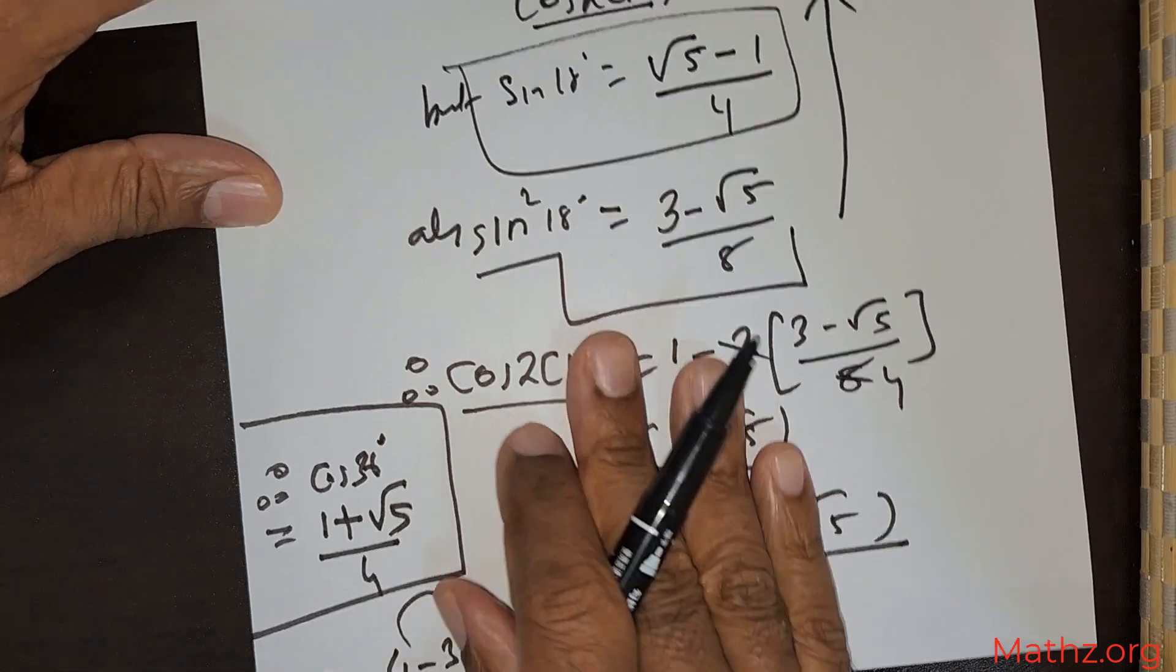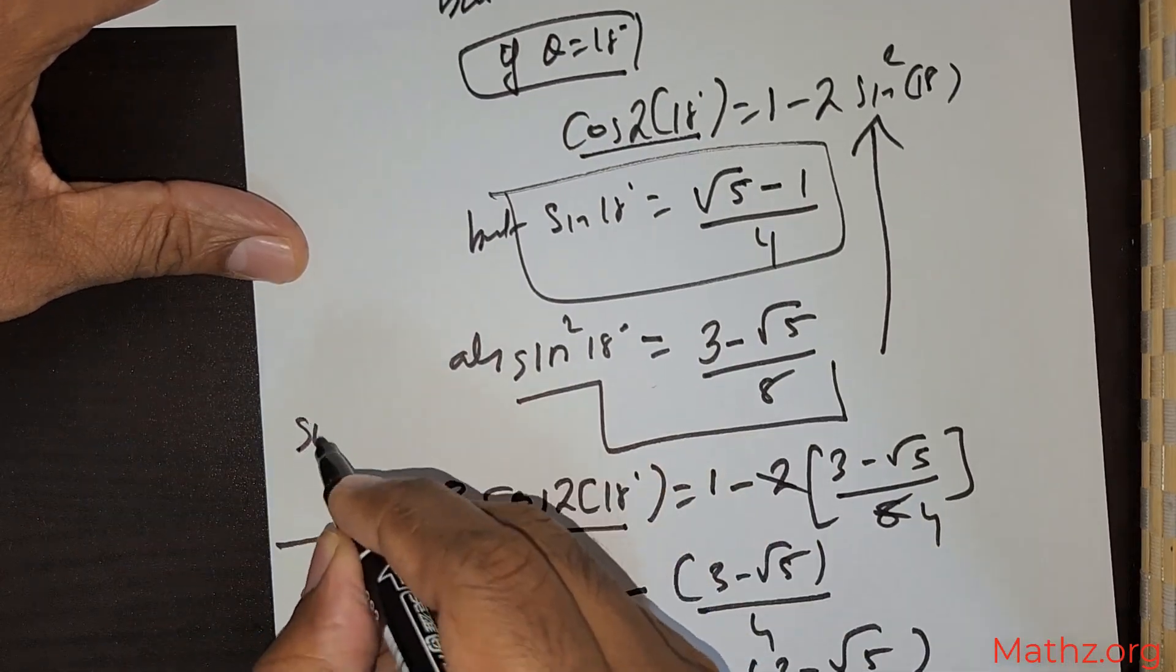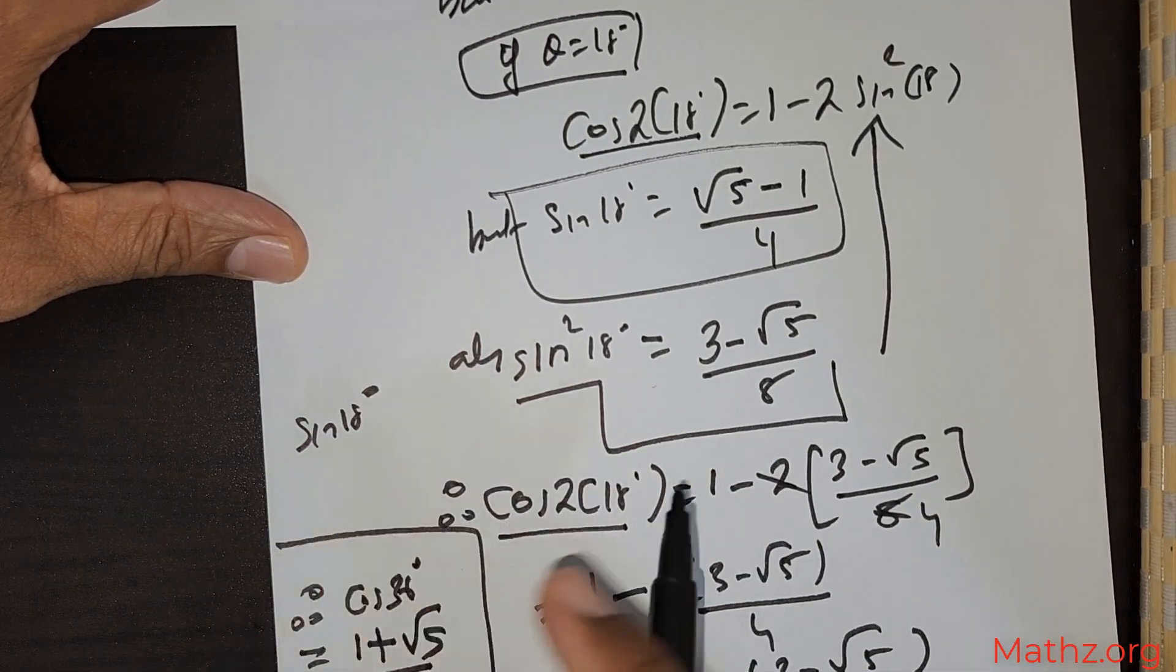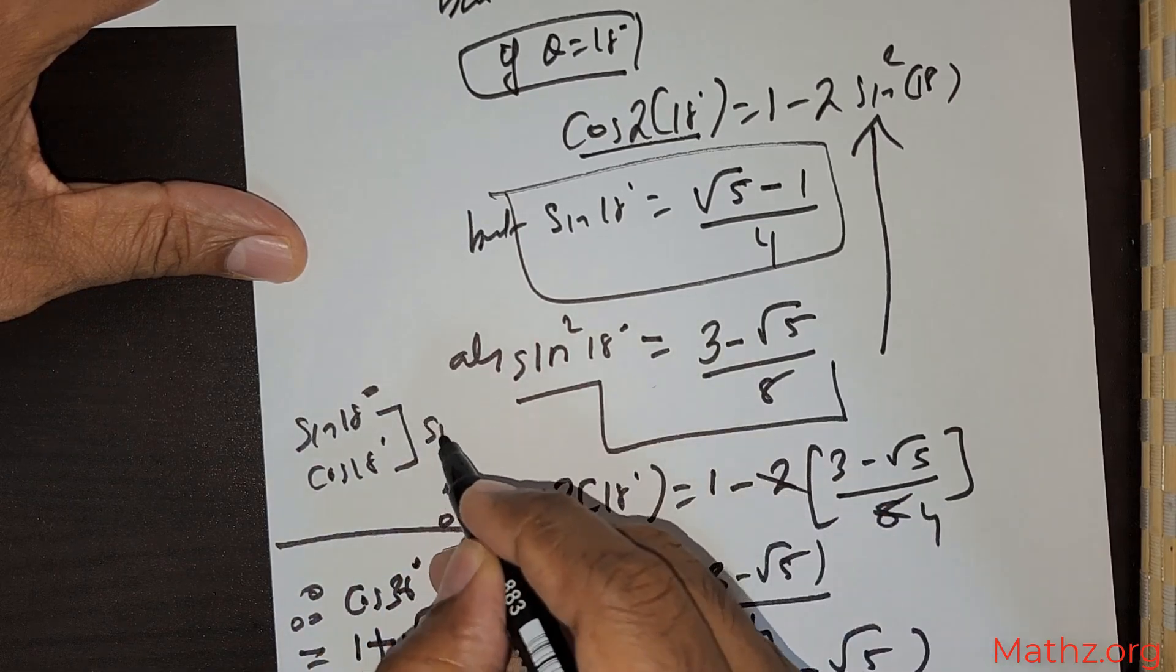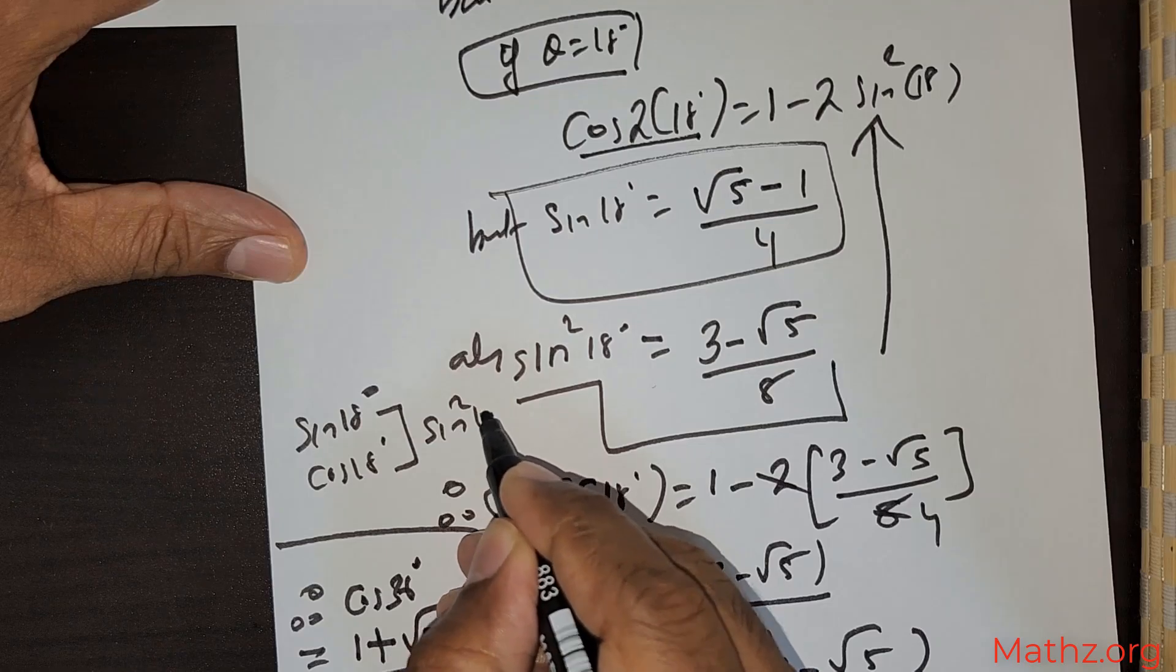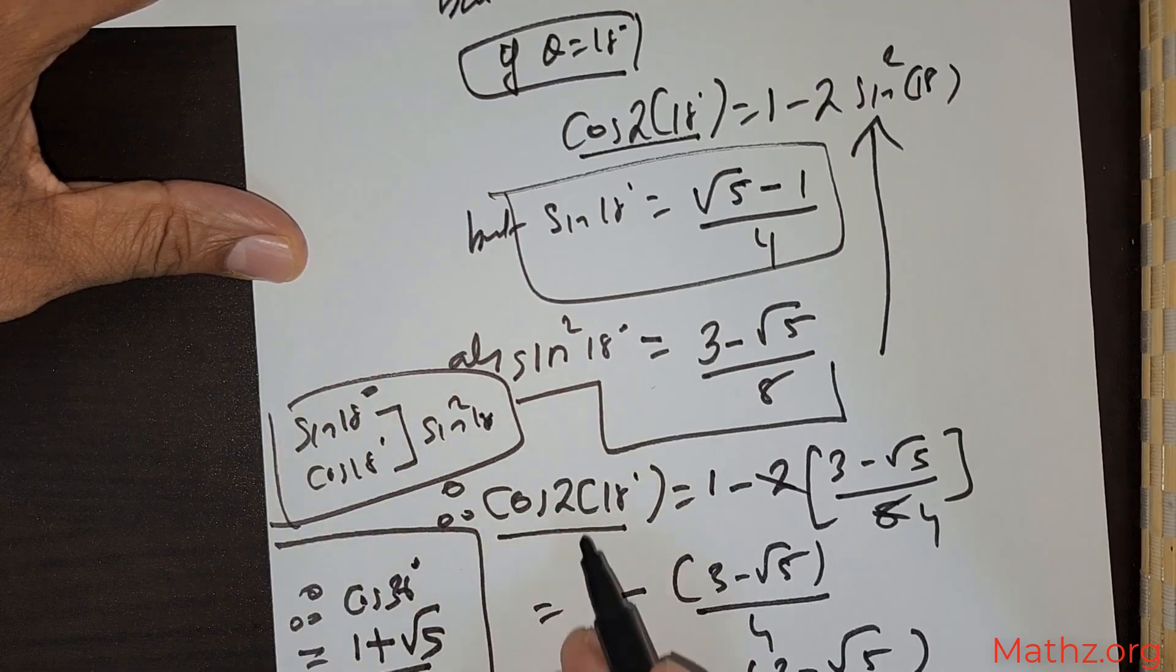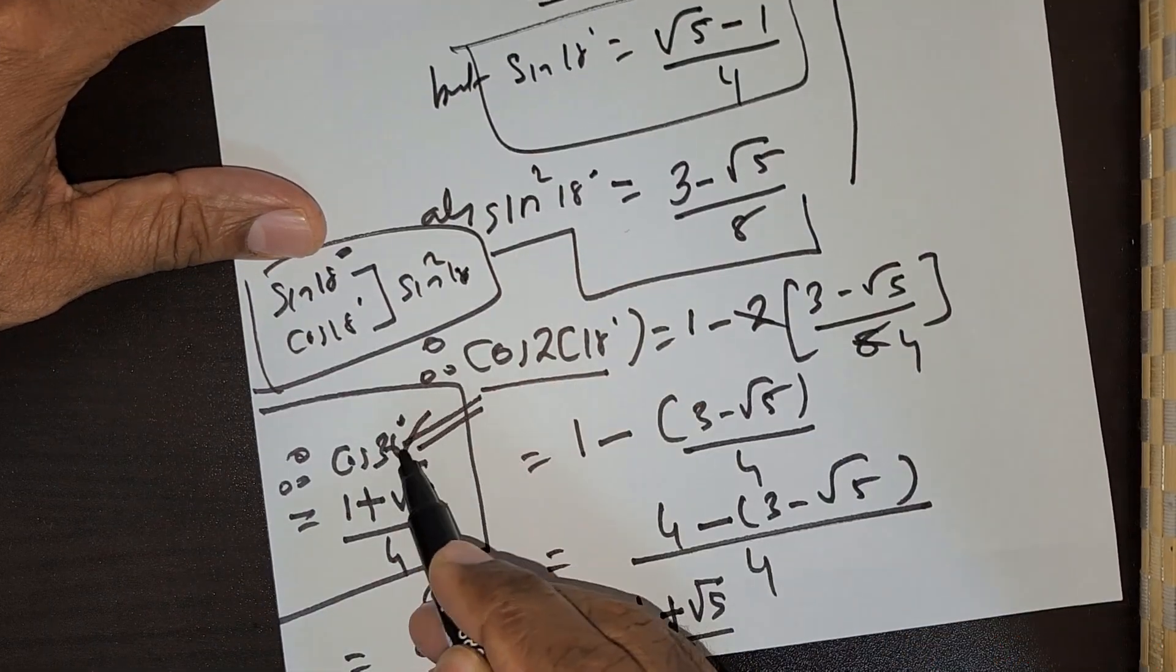So to get this, what did I do? I showed you how to get sin 18°, then cos 18°, then sin² 18°. All of these things are required to reach this point.